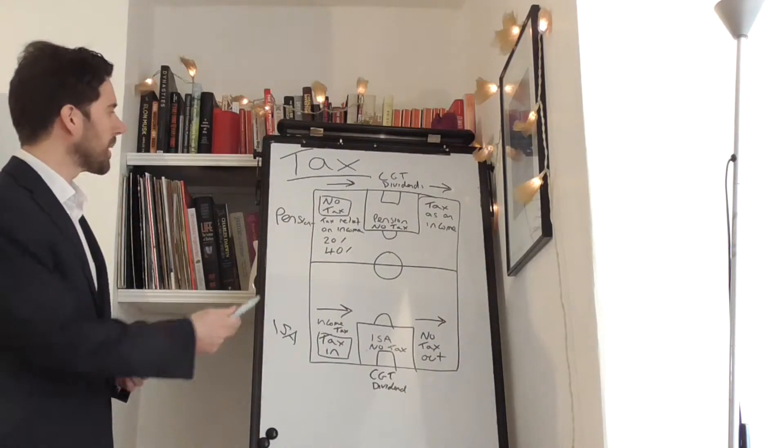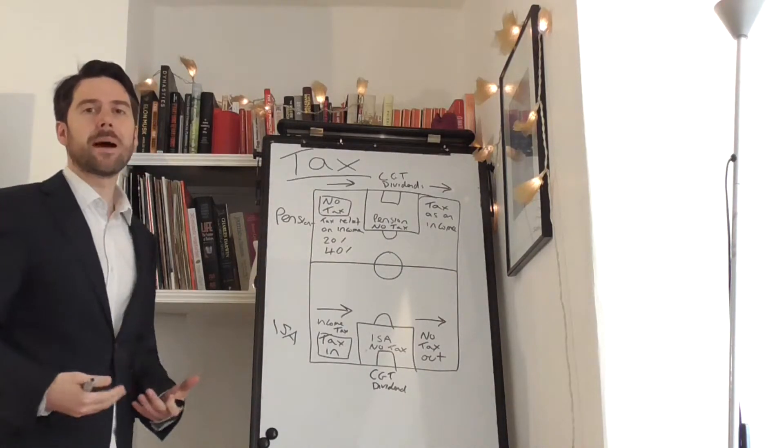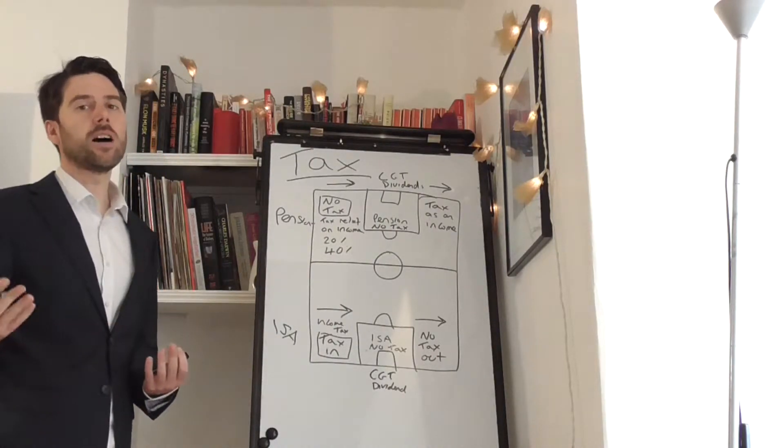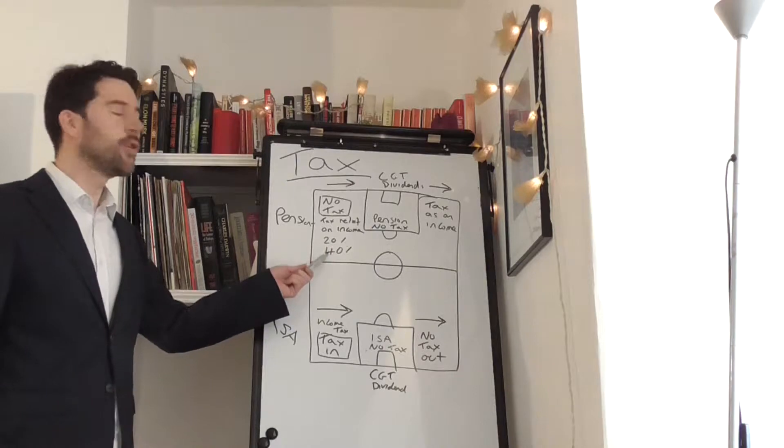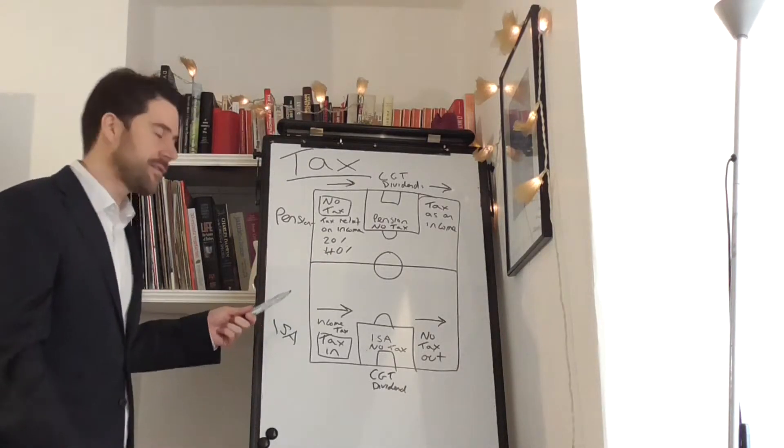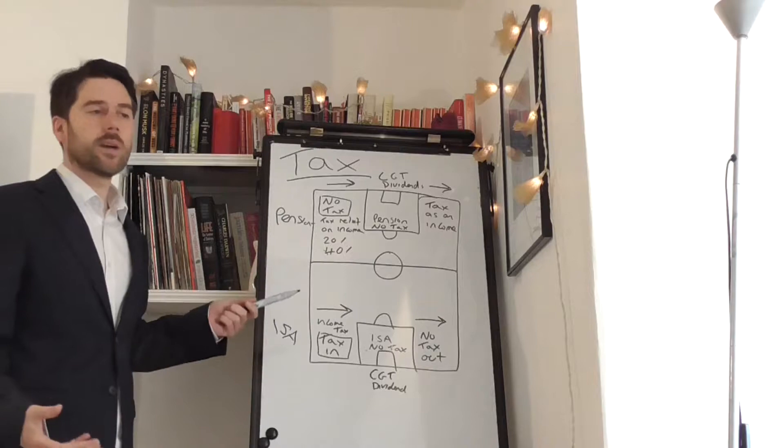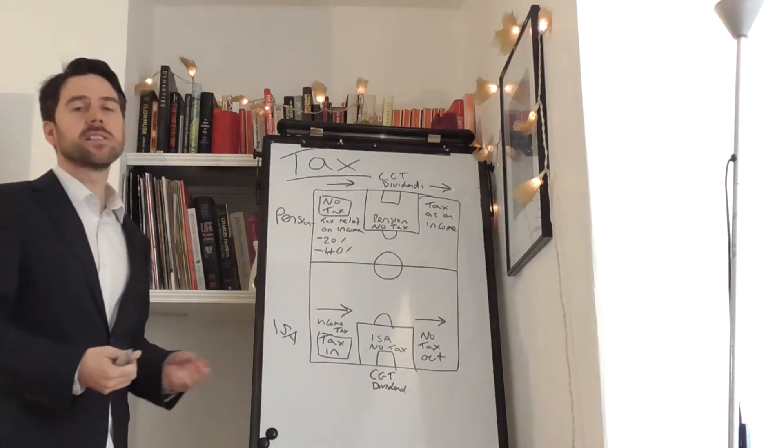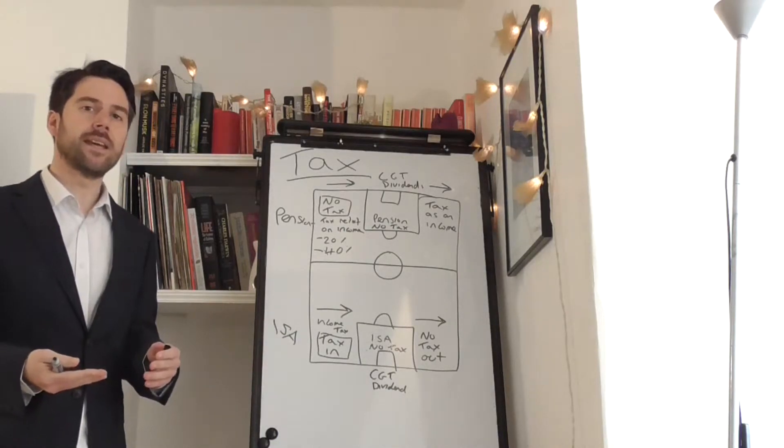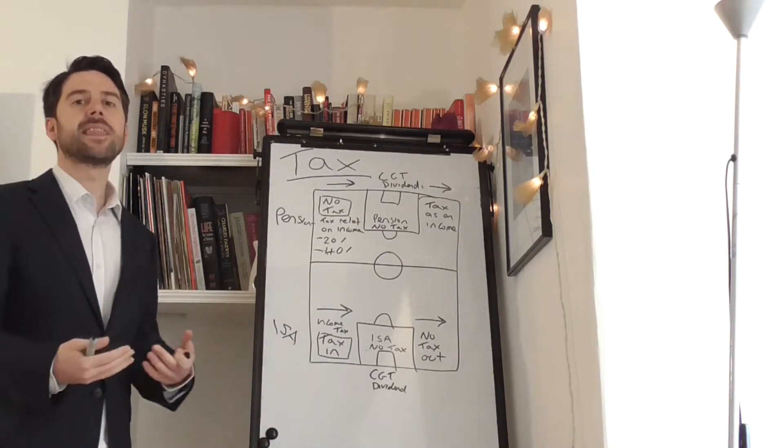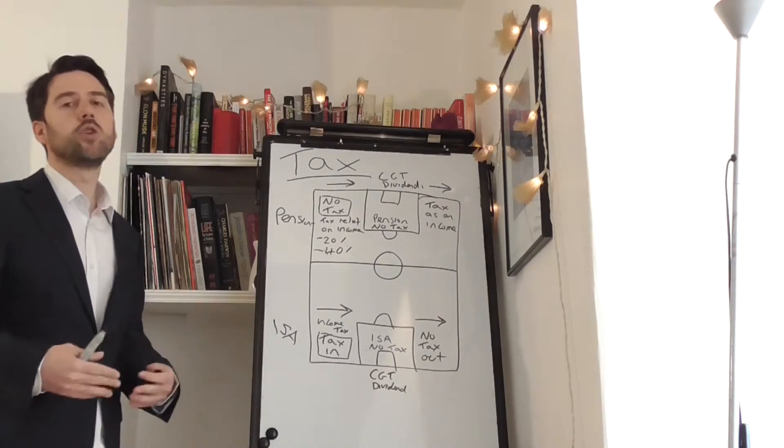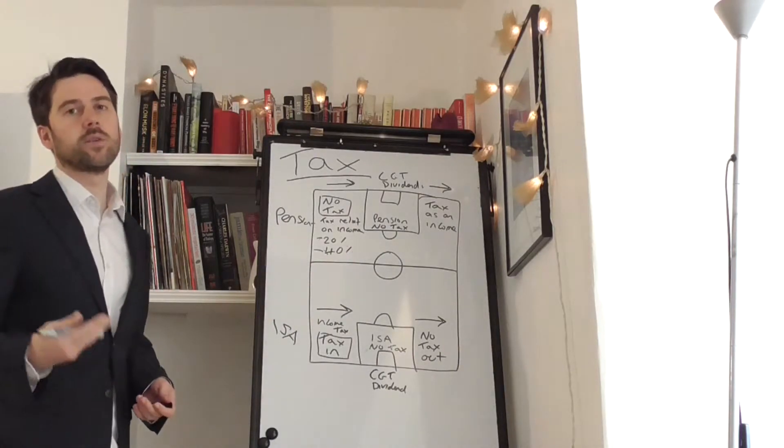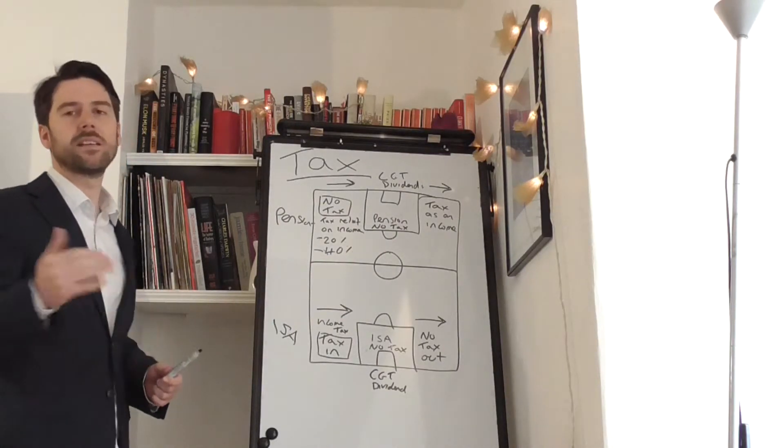With a pension, the great thing is there's no tax on the way in, and that's amazing. If you're a high-rate taxpayer at 40%, you'll get that back as tax relief. If you're a basic rate taxpayer, you'll get this back at 20%. Because you've been taxed already on your pay packet, when you see your pay packet that's already been taxed by the government, you'll be given that back at the rate of your income, either 20%, 40%, or 45%.